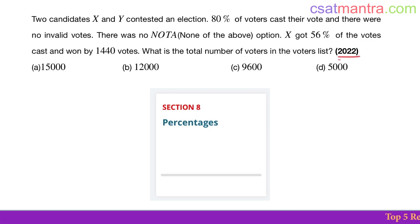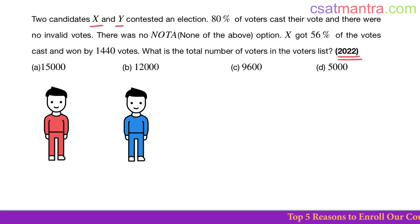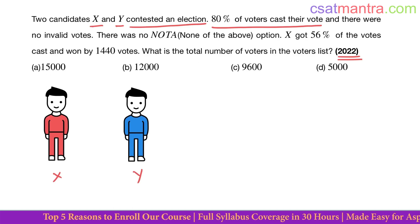This question is asked in 2022 based on percentages. Two candidates X and Y contested an election. 80 percent of voters cast their vote. So out of total, 80 percent of voters cast their vote.